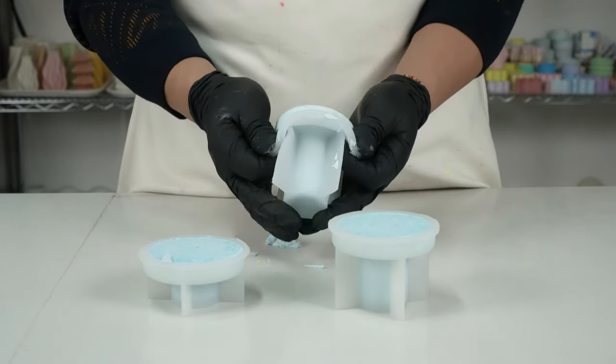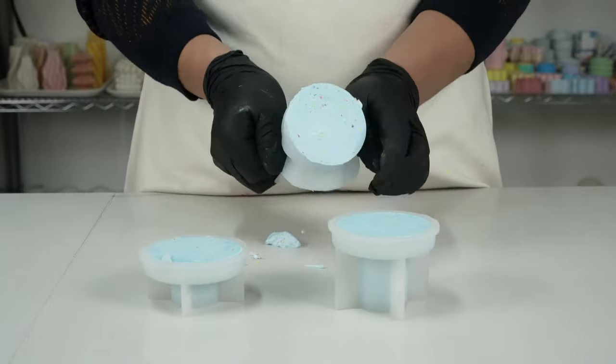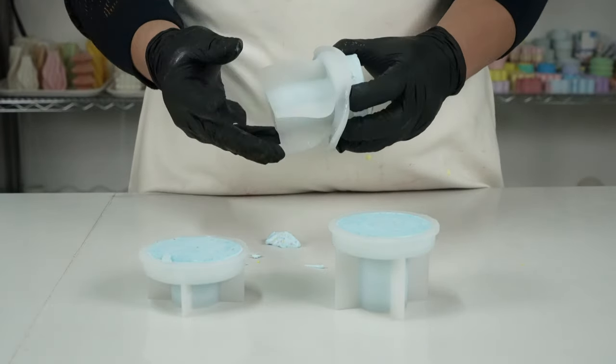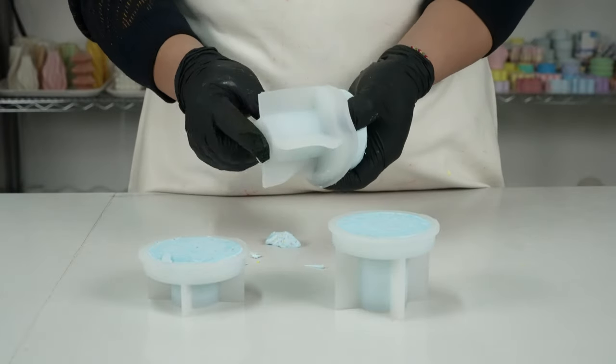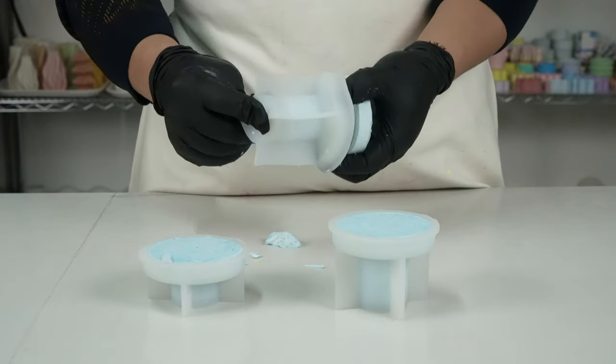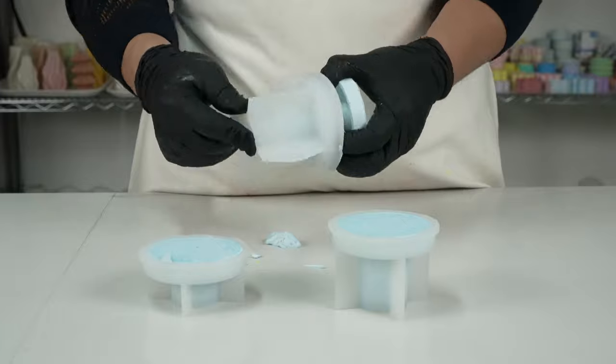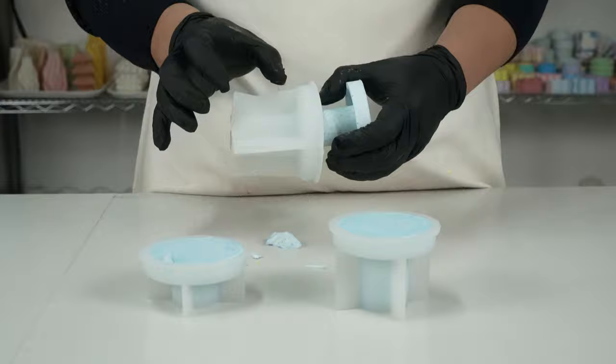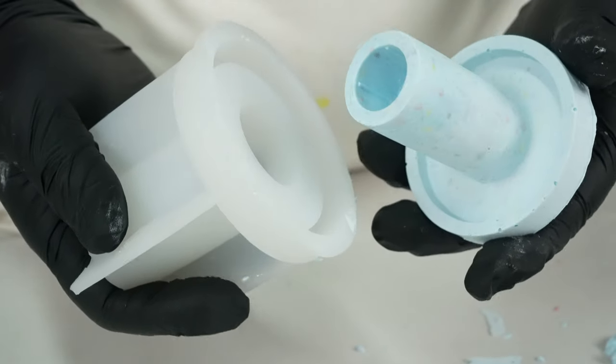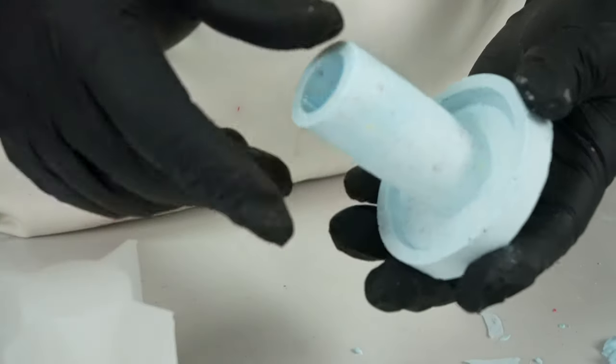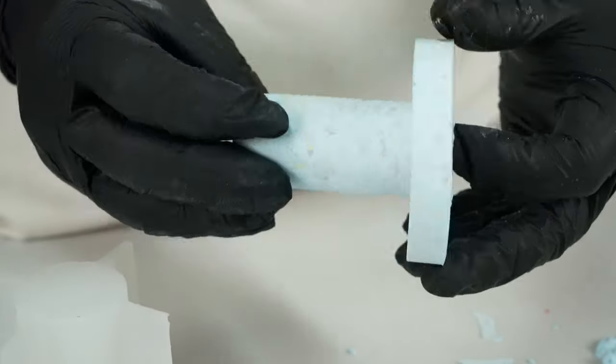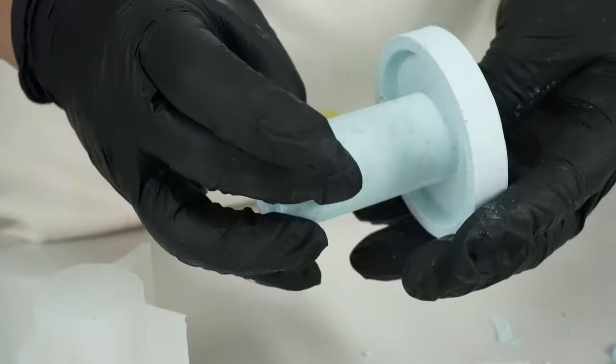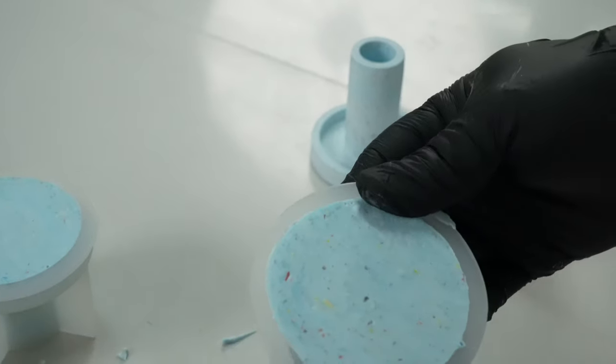Demolding your terrazzo-style candle holder is the next step after pouring the liquid and letting it cure. Before you start, ensure that the liquid has completely cured as per the manufacturer's instructions. Gently pull the edges of the silicone mold away from the candle holder, taking care not to cause any damage. If the candle holder is still stuck, place it in the freezer for a few minutes to loosen the mold. Inspect the candle holder for any rough edges or imperfections, and smooth them out using sandpaper or a file.